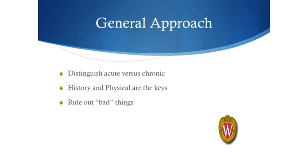With acute low back pain, I think one needs to be careful to rule out any bad things that might be there. That's done pretty quickly with your history and physical. The history and physical in both acute and chronic low back pain are probably the most important features of diagnosing and treating a low back problem. We want to make sure there are no neurological problems that might indicate a herniated disc, cauda equina syndrome, advanced cancer, or infection. Once you've done that, you can buy time in terms of your treatment and work with the patient to get them through this acute episode.